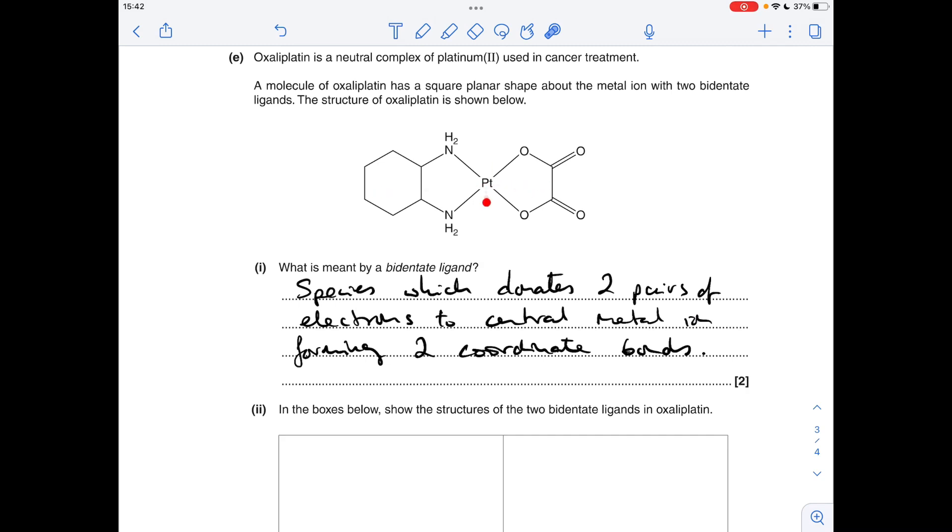So obviously there's your central metal ion. So these two O's here are providing a pair of electrons here and here. So there's one of your bidentate ligands will be this thing here. Obviously these are going to be O minus ions. On here, it's the nitrogens that are providing the pairs of electrons here and here. So obviously if we just imagine we cut that, I'll draw them in a second. We cut that bit off and this would be the other one.